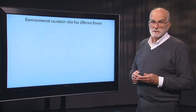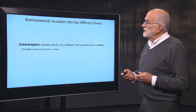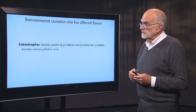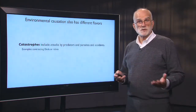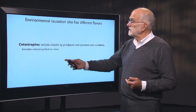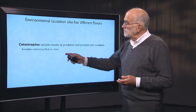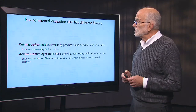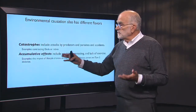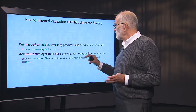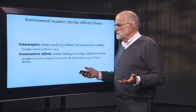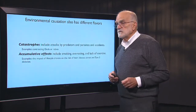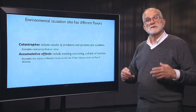Environmental causation also comes in different flavors. There are environmental catastrophes that include attacks by predators and parasites — contracting Ebola or rabies is a true catastrophe. The probability of death by Ebola is about 70 percent, and by rabies is 100 percent if you don't get the vaccine. On the other hand, there are cumulative effects, which include smoking, overeating, and lack of exercise. Lifestyle choices affect the risk of heart disease, cancer, and type 2 diabetes through these cumulative effects.